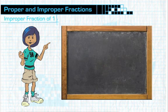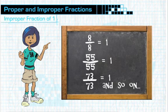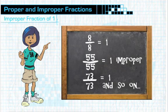For example, just as eight eighths equals one, fifty-five fifty-fifths equals one, seventy-three seventy-thirds equals one, and so on. So, all of these fractions are considered to be improper fractions since their numerators are equal to their respective denominators.